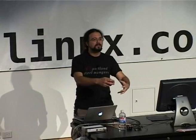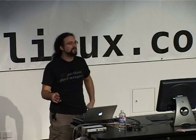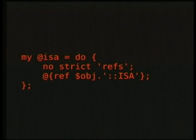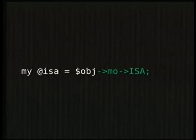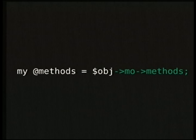Introspection has always been possible in Perl. Other languages like Java would bag on us because we can introspect — well, we can too, but it's really scary. This is how you find the parents of a method in Perl, and here it is in Perl 5i: just call 'what are your parents,' get your ISA array, do a linear walk of the complete tree, or ask what methods you have available. And then we jump into function signatures.